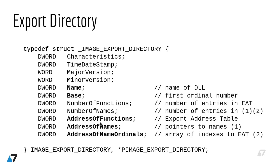There is also a NumberOfFunctions field which holds the number of elements in the Export Address Table — that is, the number of exported functions. There is also NumberOfNames, which is the number of elements in both the array of function names and the array of these numbers, so those two arrays are the same size. Lastly, there is a Name field containing an RVA to a string with the name of the DLL, and a Base field which holds the first ordinal number of the DLL.